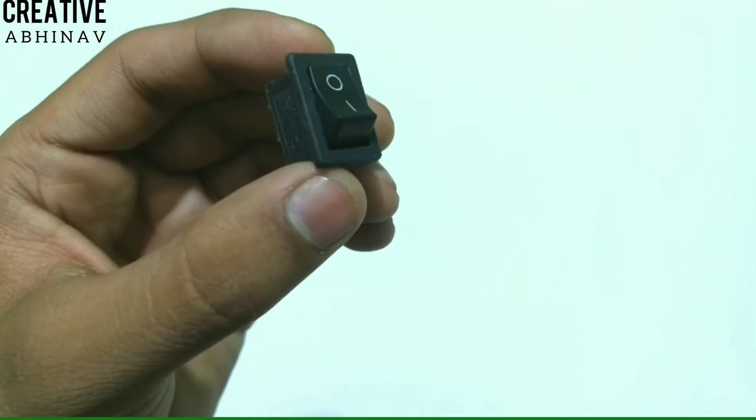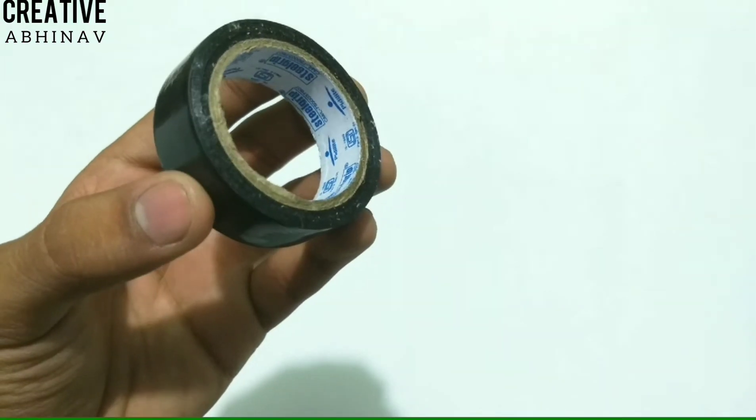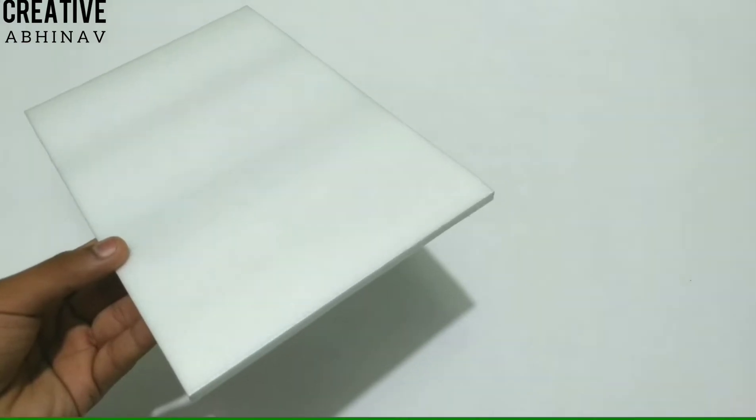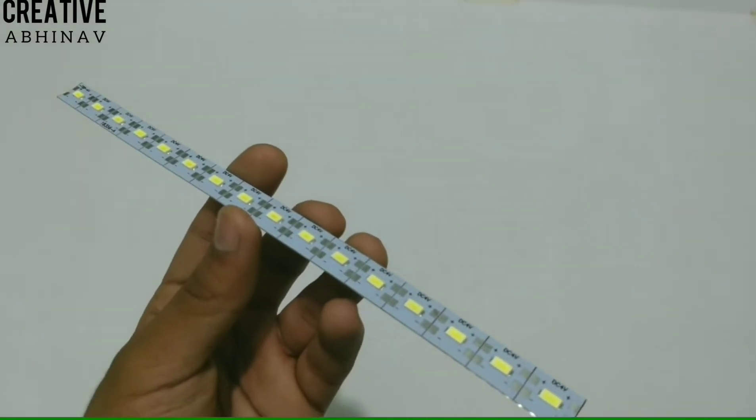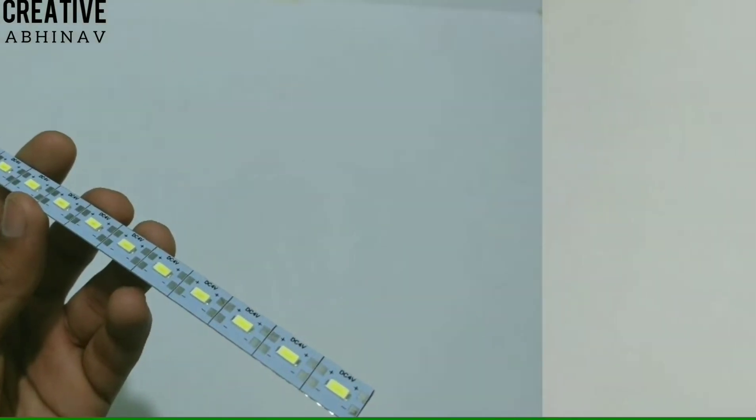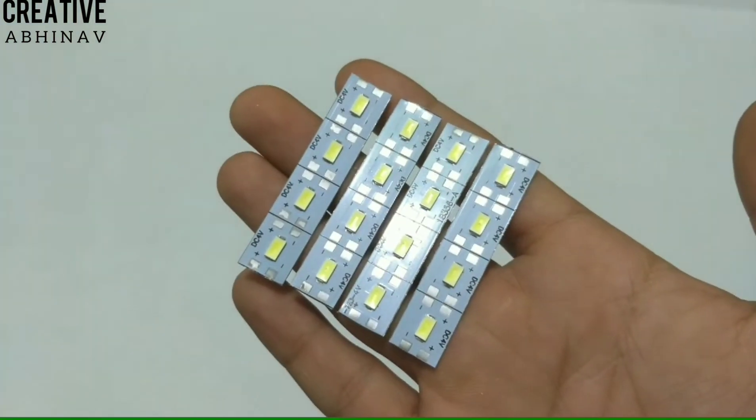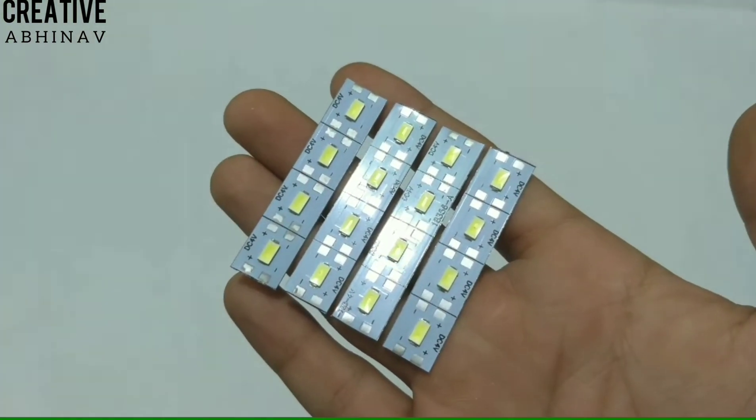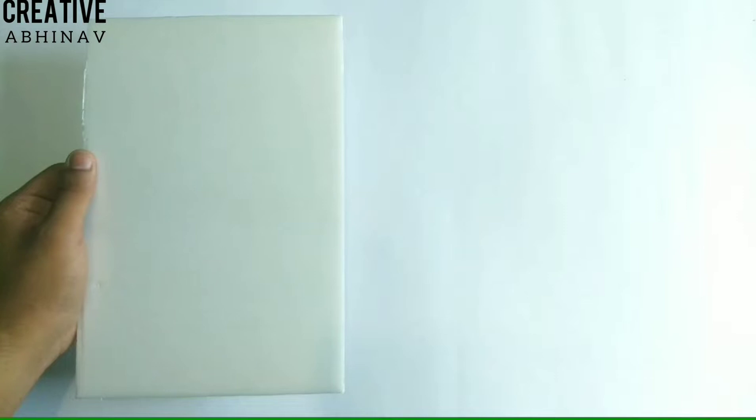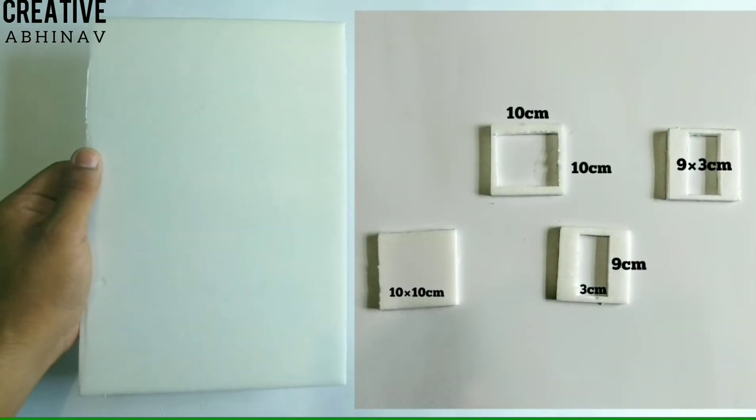On-off switch, electric tape, and a piece of compressed thermocol. Now take a LED strip, then we have to cut it into four parts like this. Now take a compressed thermocol sheet, then we have to cut out some marked dimensions.